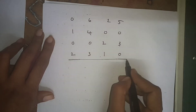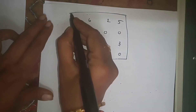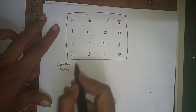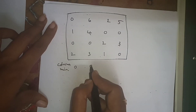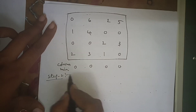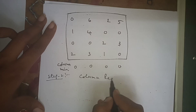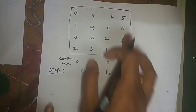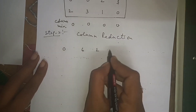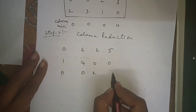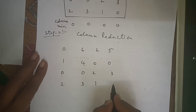Step 2 is column reduction. We find the column minima: the minimum of the first column is 0, second column is 0, third column is 0, fourth column is 0. Therefore, after column reduction, the table remains the same as after row reduction.